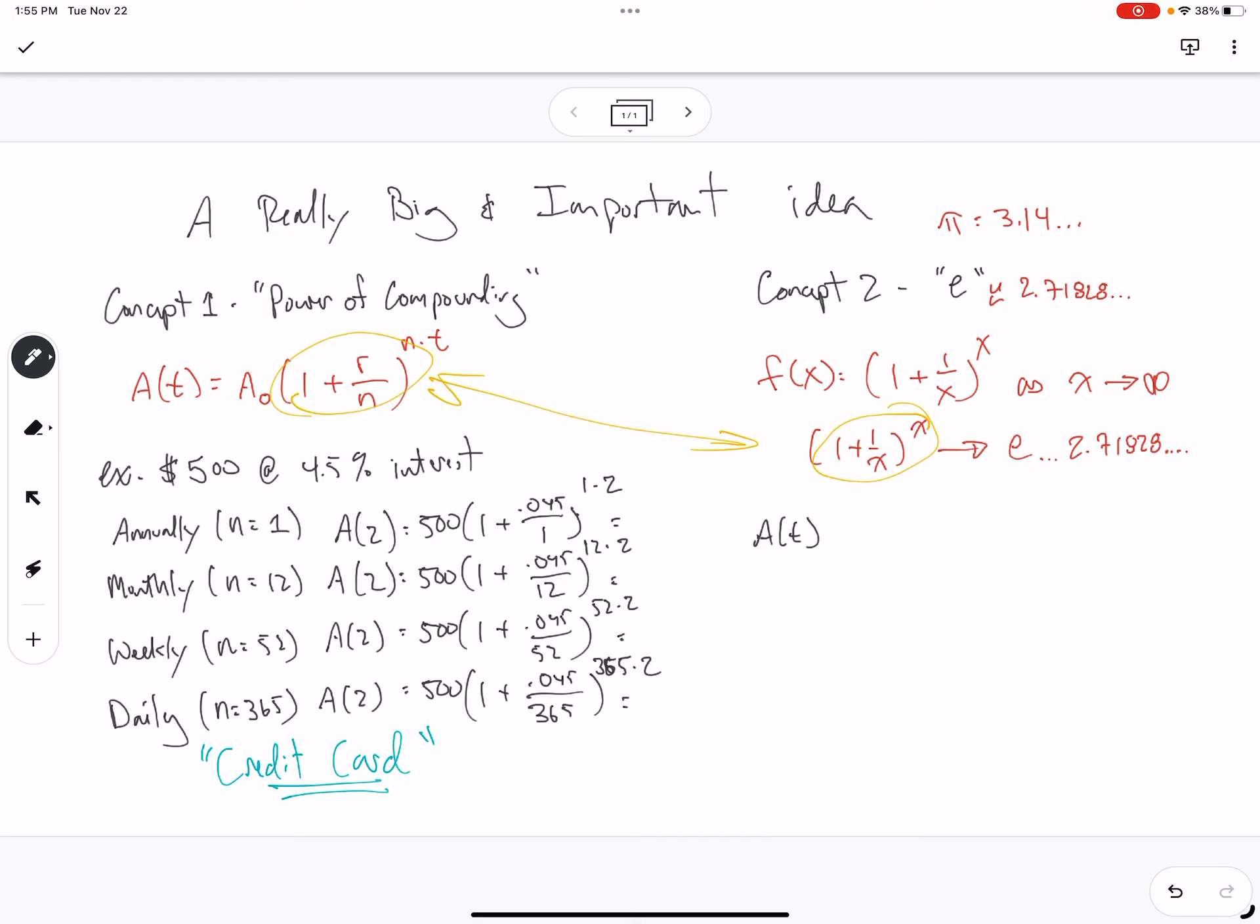A of t is equal to A naught, the initial value, times 1 plus the interest rate divided by the number of times compounded, to the power of the number of times compounded times t.